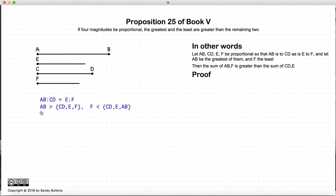So let's begin. First off, here we are just restating the initial conditions, and this is stating that AB is the largest line segment, and this is stating that F is the smallest line segment.